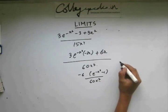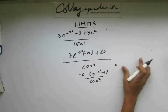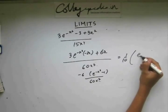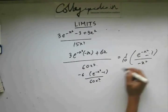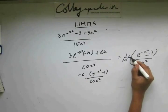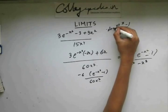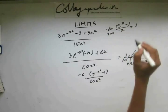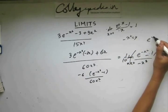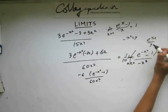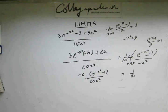So what I've got is 1/10 times (e to the power minus x squared minus 1), over x squared. Now, you know the standard result that the limit as x approaches 0 of (e to the power x minus 1)/x is 1. So if I take minus x squared as y, this converts to (e to the power y minus 1)/y, which equals 1. So the limiting value is 1/10. The answer is 1/10.